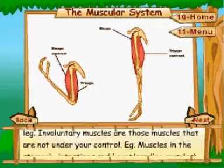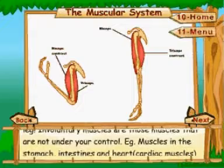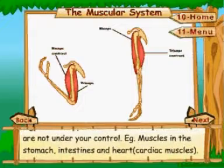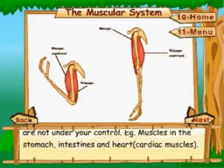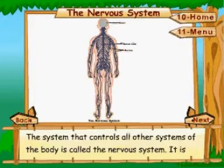Involuntary muscles are those muscles that are not under your control. Examples include muscles in the stomach, intestines, and heart.